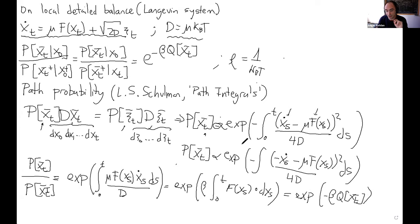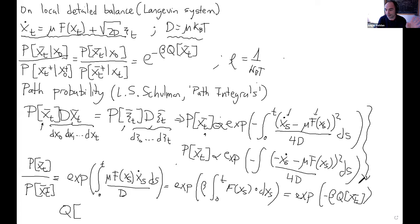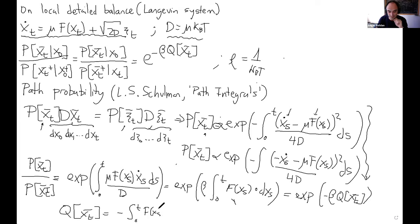I have proved the local detailed balance condition for Langevin systems, as long as heat is defined as in Sekimoto — using Stratonovich calculus, so Q = −∫f(x(s)) ∘ dx(s). This makes sense: I used standard calculus, not Itô. This is just a digression — take a look at home, check path integrals, and you will be more comfortable.